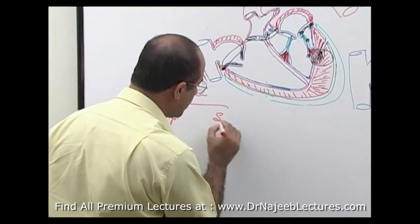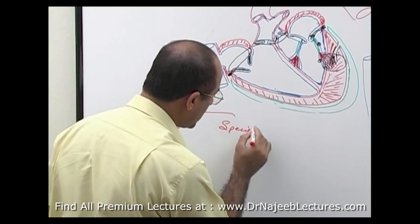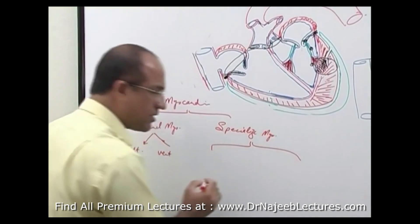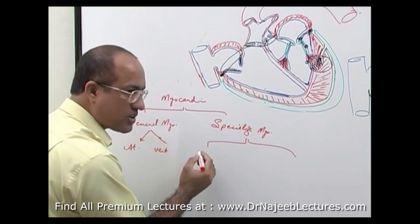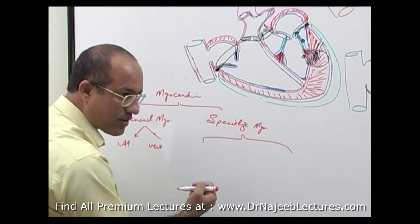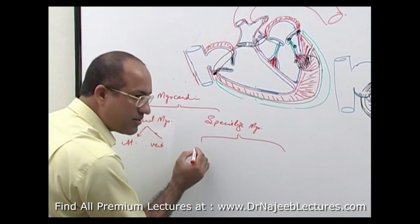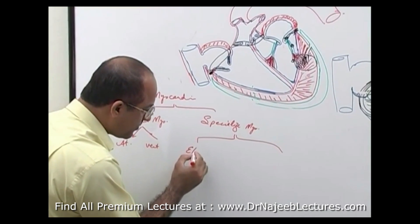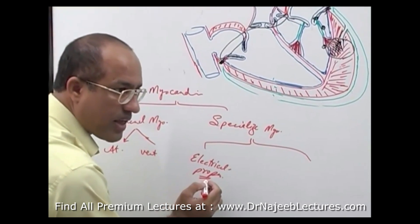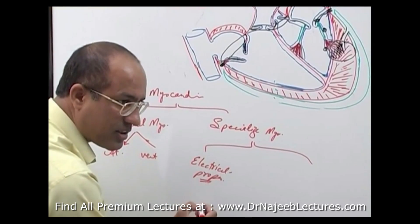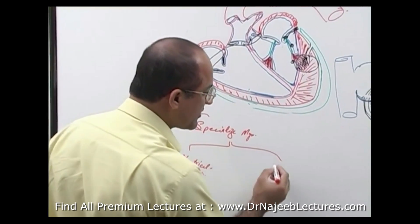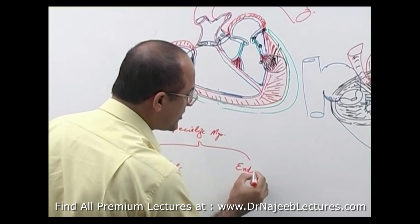Then there is specialized myocardium — modified myocardial cells. There are two types of specialized myocardial cells. Some have specialized electrical properties; for example, some of these cells can act as pacemakers, and some can act as electrical current conduction pathways. And then some specialized myocardial cells work as myocardial endocrine cells.